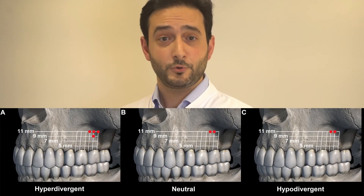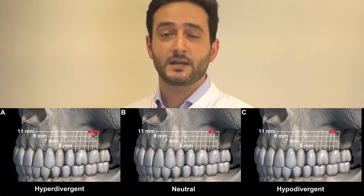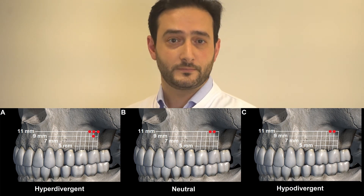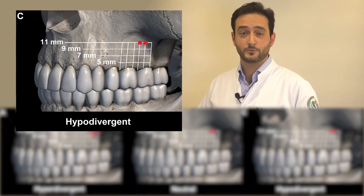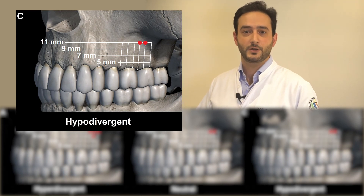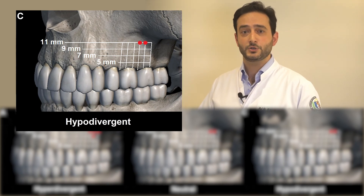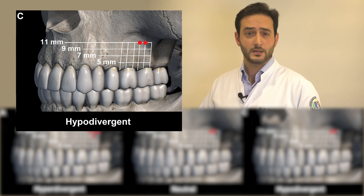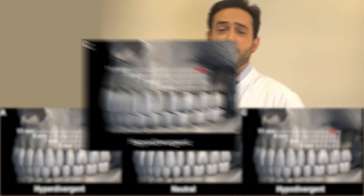In the hypodivergent group, the safe sites found were between the first and second molars at 11 mm from the alveolar crest, and the mesial root of the second molar at 11 mm from the alveolar crest on both sides.